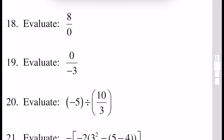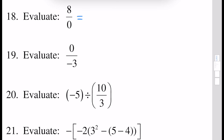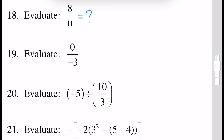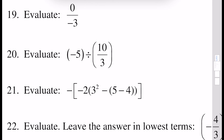Next example: evaluate 8 over 0. You have to remember that division by 0 is not defined — this is something in mathematics we always have to remember. That's why this is an undefined operation. If you have something divided by 0, always write that this is an undefined operation. Next, evaluate 0 divided by minus 3: anything divided — 0 divided by anything — is equal to 0.